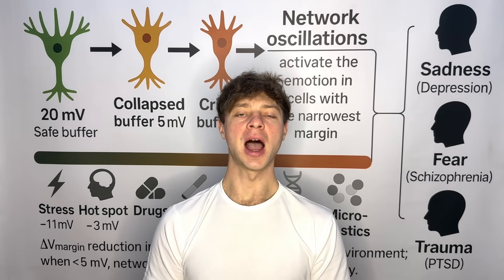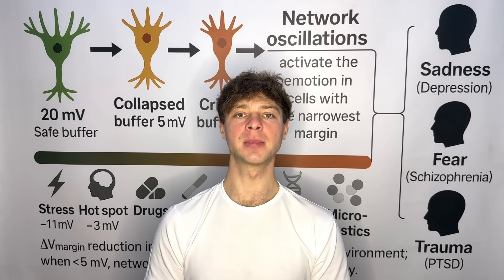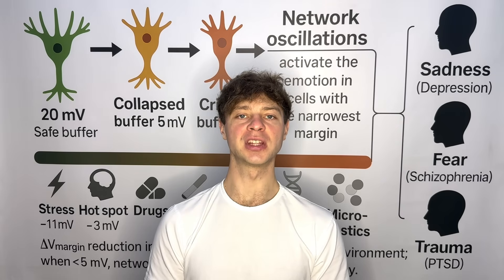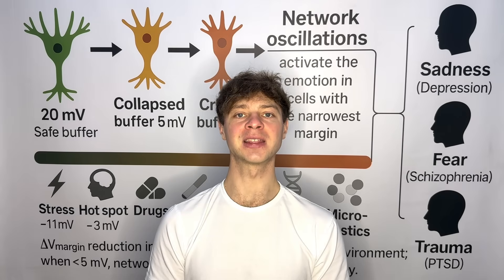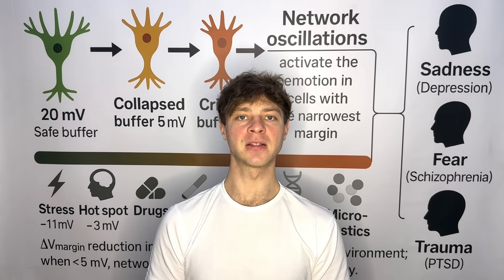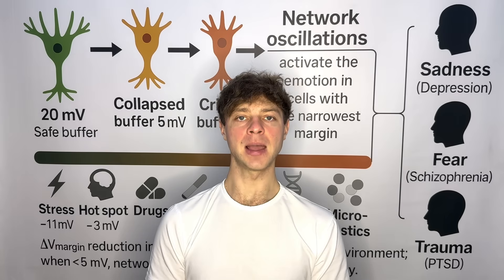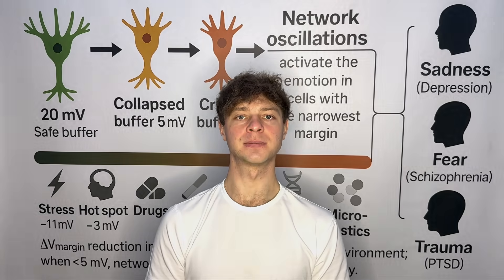Today, I'll show how, according to the excitability margin model, schizophrenia, depression and PTSD may share one common trigger: a collapse of the neuronal excitability margin in ventral CA1. This very same process may extend far beyond psychiatry, reaching epilepsy, ADHD and even Alzheimer's disease.